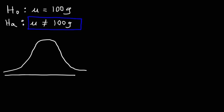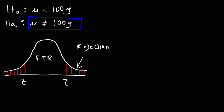We have a normal distribution and we're going to shade the area on the left and on the right — this is a two-tailed test. The shaded area represents the rejection region; the area that is not shaded is the fail-to-reject region. The z-values that separate these two regions are known as critical values.